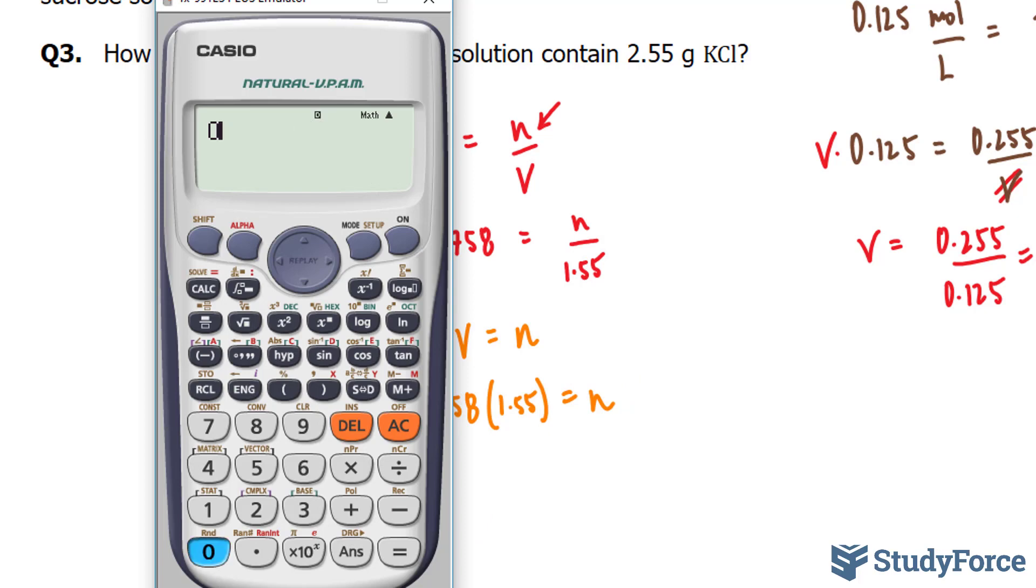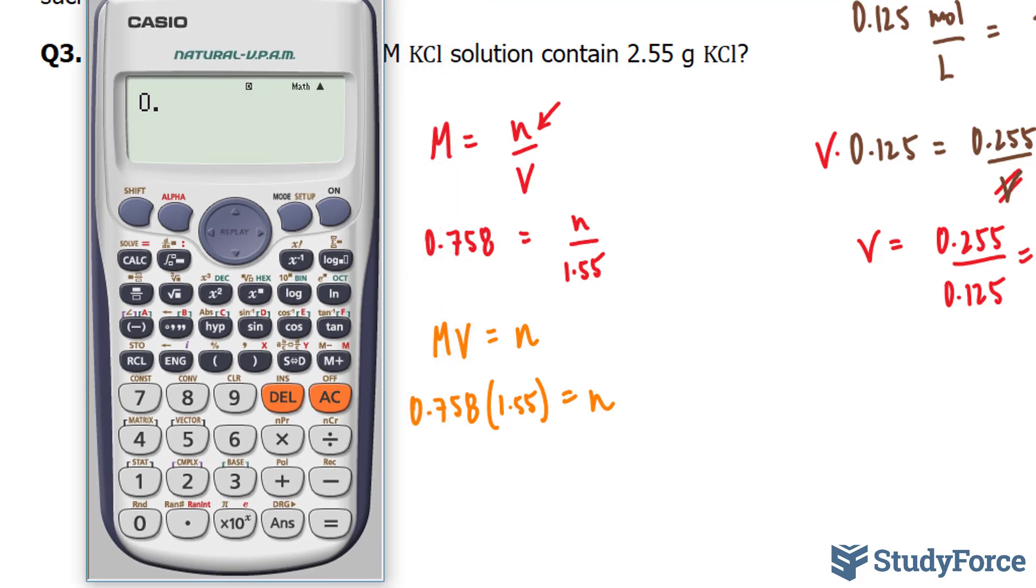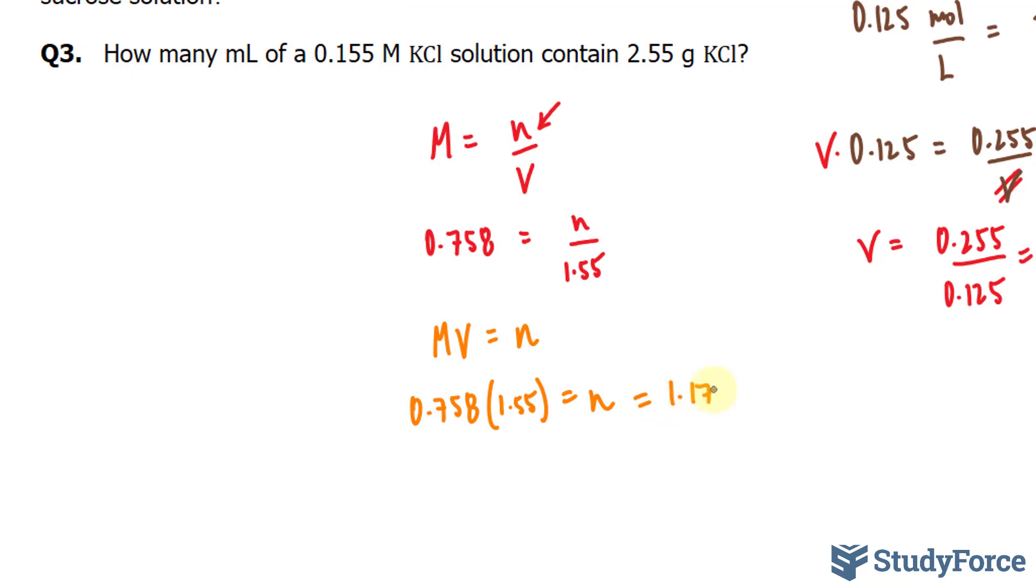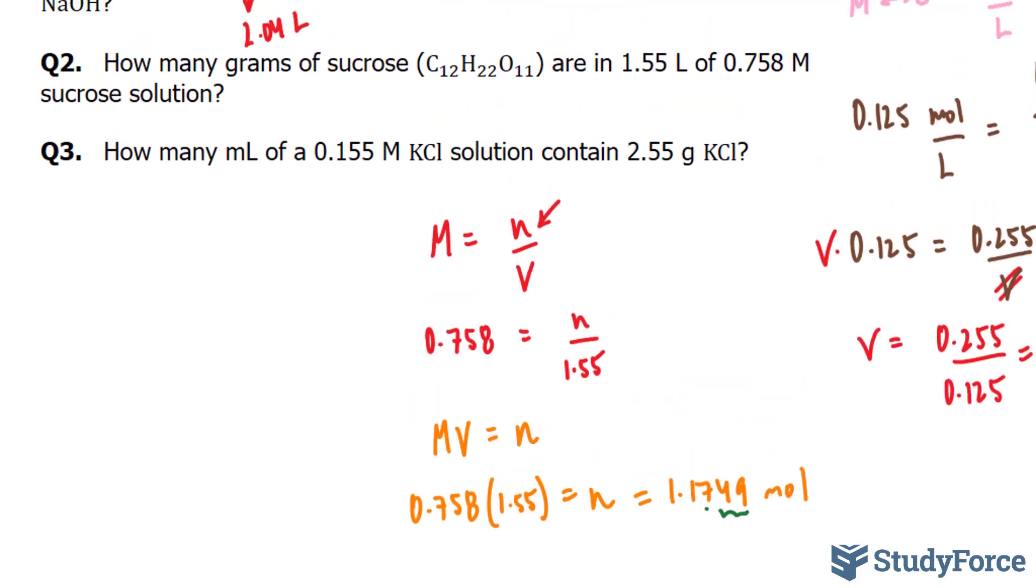And then, using my calculator, 0.758 times 1.55 gives me 1.1749 moles. Everything after the 7 is insignificant, although I'll keep these numbers while I calculate for what I'm looking for, which is grams. And then at the very end, I'll round.